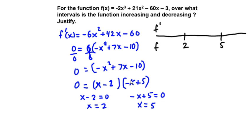Then we're going to analyze this function. The first thing we're going to do is take a number less than 2. We can take 0, right? So if we have 0 for x, we're going to have a negative times a positive, which is negative. So the function is decreasing from negative infinity to 2.